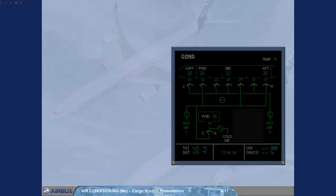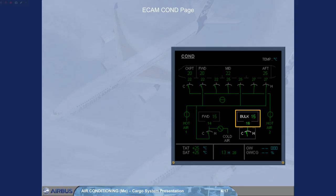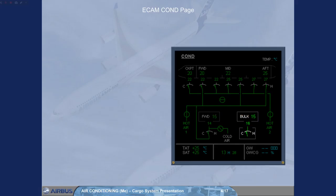The bulk cargo indications are displayed on the ECAM COND page only if the heating system is installed. They are the bulk cargo temperature indications — the duct inlet temperature and the ambient temperature — and the electrical fan heater indications, which can be at C when it is at its lowest heating level, and at H when it is at its highest heating level. The isolation valves and the extraction fan are not represented on the ECAM page.